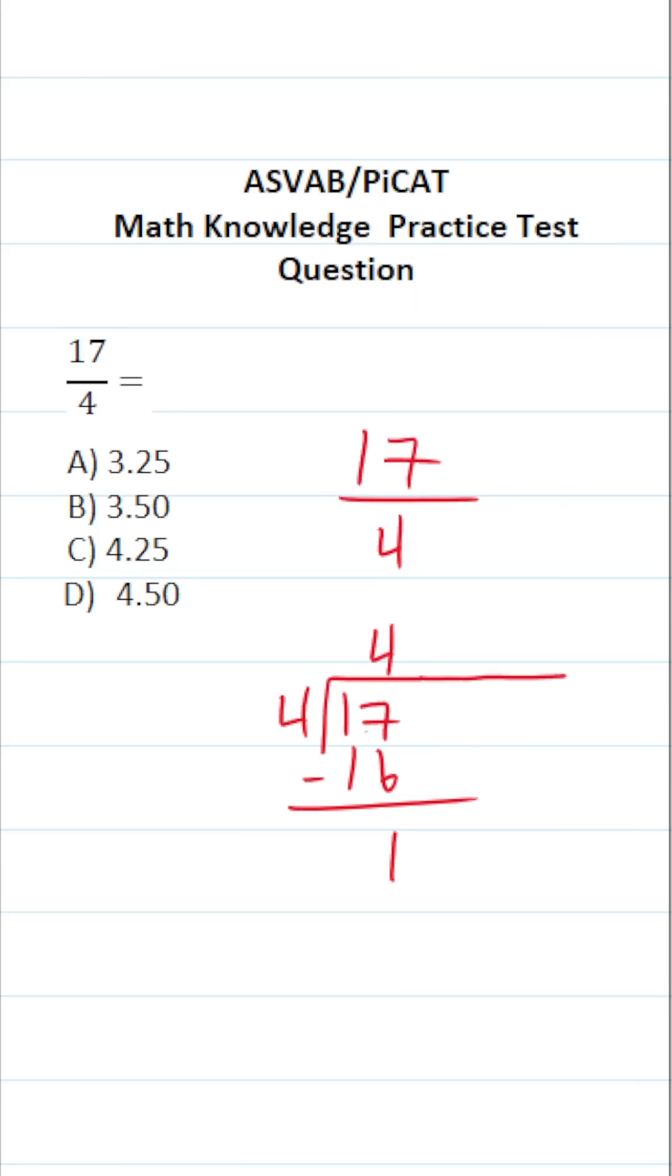Now, of course, I can write 17 with a decimal and a couple of zero placeholders. That enables me to drop down the zero placeholder and bring the decimal into my answer.